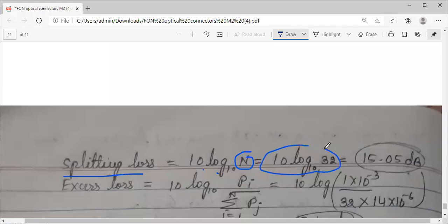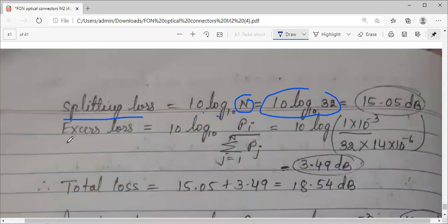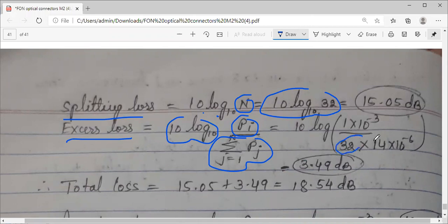Coming to excess loss: 10 log base 10 input power applied divided by all those outputs. 32 different fiber ends with 14 microwatts each, so multiply 32 times 14 microwatts. You will get 3.49 dB. Total loss is sum of splitting loss plus excess loss, calculated as 18.54 dB.